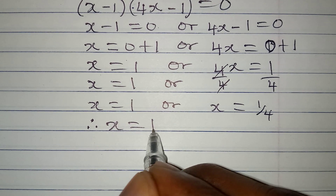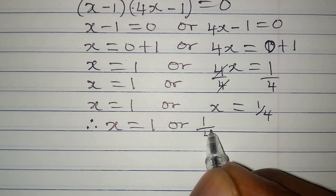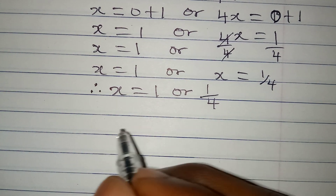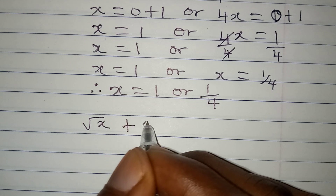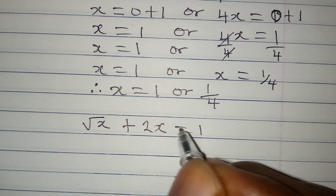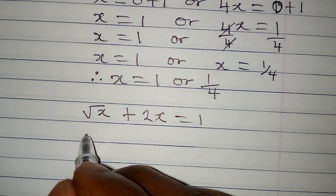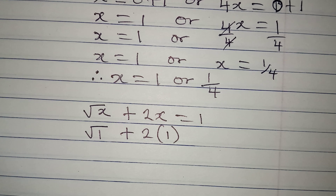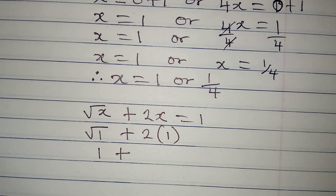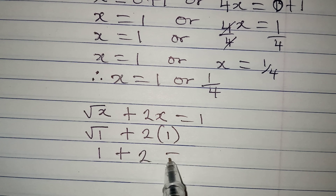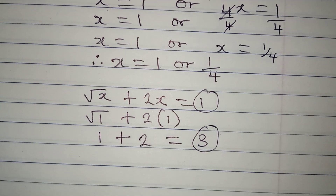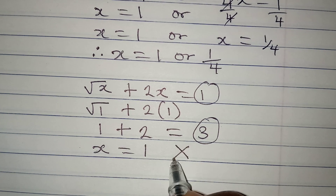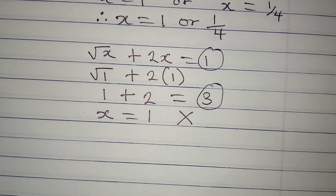Therefore x equals 1 or x equals 1/4. But we need to check if both satisfy the original equation: square root of x plus 2x equals 1. Testing x equals 1: square root of 1 plus 2 times 1 equals 1 plus 2 equals 3, which is not 1. So x equals 1 does not satisfy the equation.